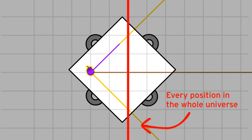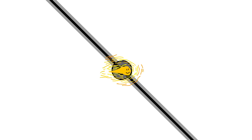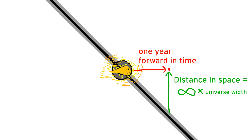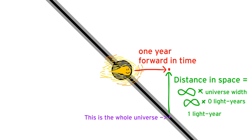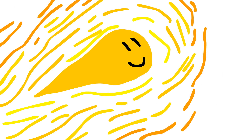Some observations. Every position in the whole universe compresses to a single point. That means, from light's perspective, the universe has no width — it's infinitely short. Likewise, after just one year, light will have traveled infinity universes away, since a universe's width is now zero light years. For that matter, after just one millisecond, light will have traveled infinity universes away. Therefore, from light's perspective, it takes exactly zero time to pass through the entire universe. That means for light, time does not pass at all.